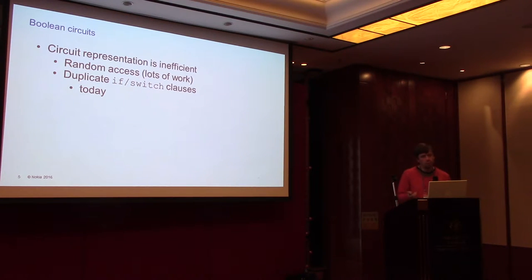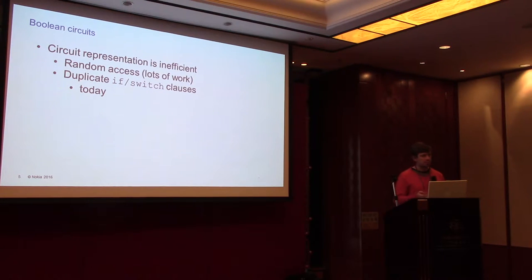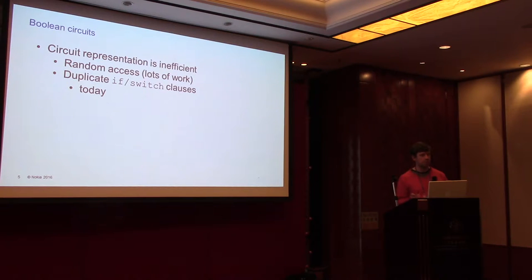Naively, we just scan the entire memory and multiply out the data that we want to get. The oblivious RAM line of work improves the asymptotics of that, at the cost of having a much more expensive basic step. I wanted to mention it as another example of what people look at that deals with the issues of function representation in circuits.